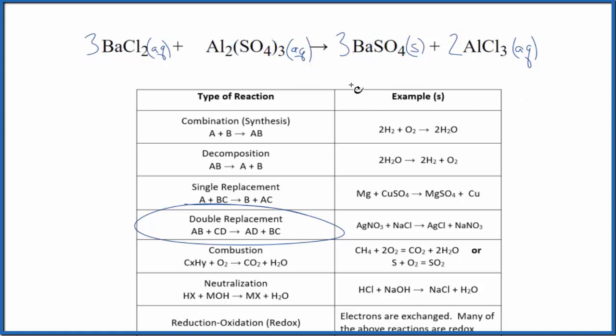If you need help with that, there's a link in the description to a fuller video on how to balance this. So the type of reaction for barium chloride plus aluminum sulfate, it is a double replacement reaction.